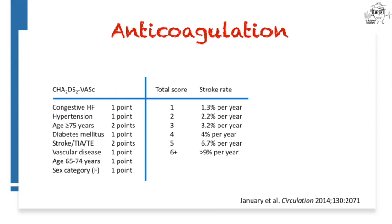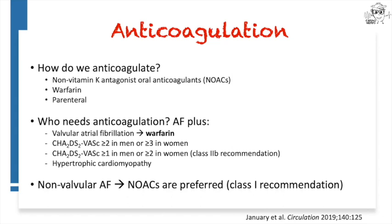In terms of anticoagulation, you may have heard of the CHADS-VASc score. Each of the conditions listed is assigned a certain number of points, and that total score relates to the stroke and thromboembolic risk of the patient — you can see the percent per year stroke risk on the right-hand side. Anticoagulation options include non-vitamin K antagonist oral anticoagulants (NOACs), traditional warfarin, or parenteral anticoagulation in select patients like bridging or in the hospital.